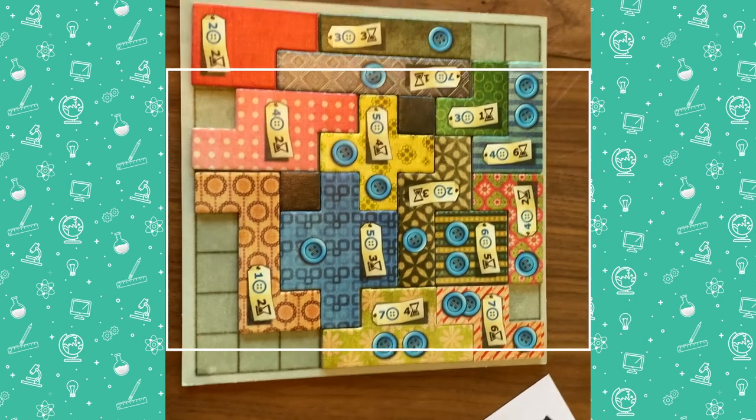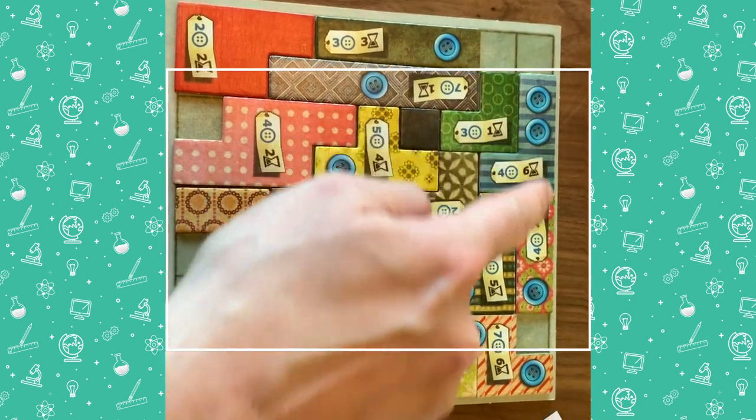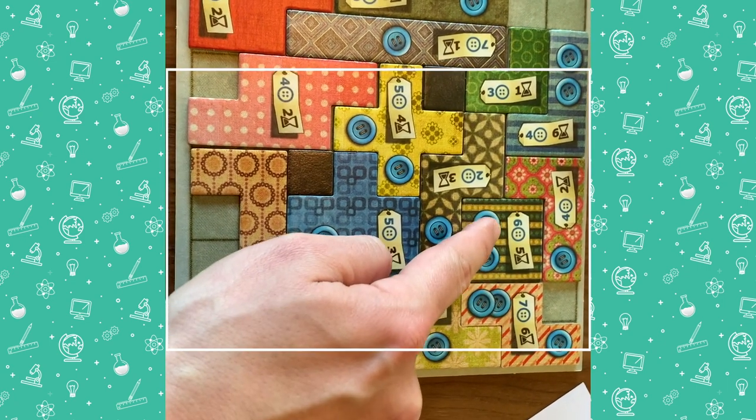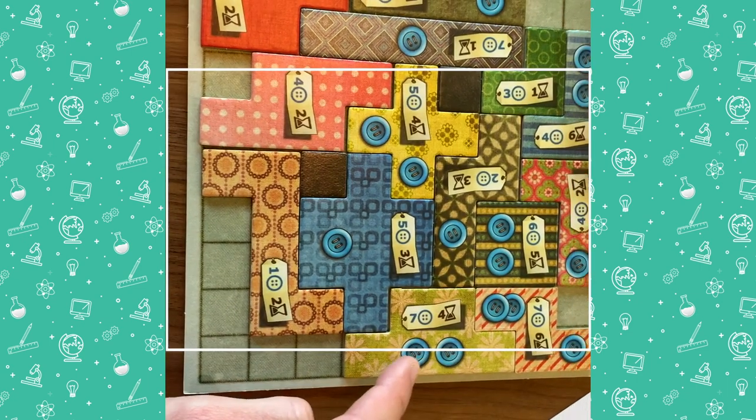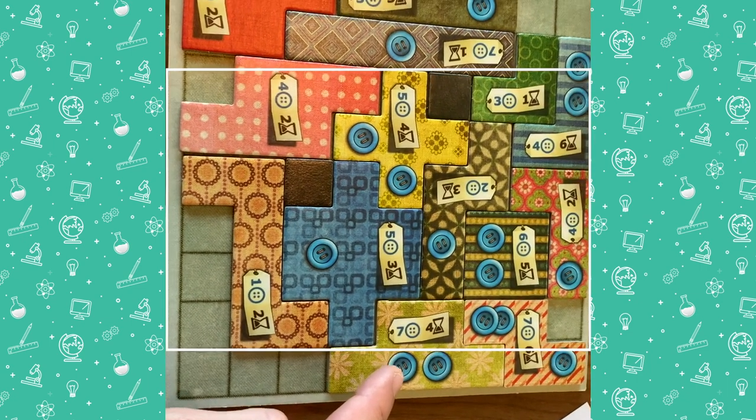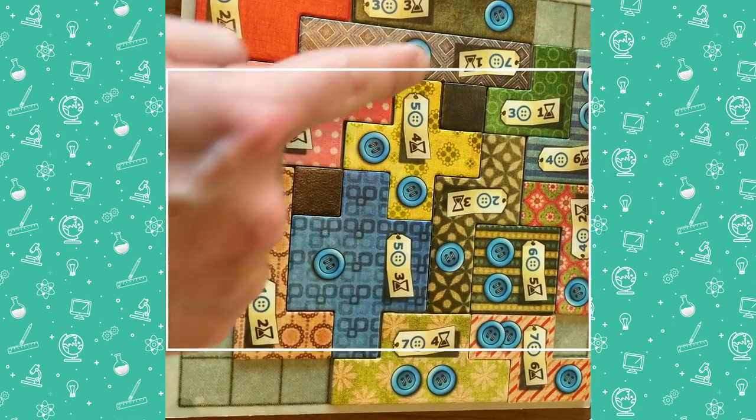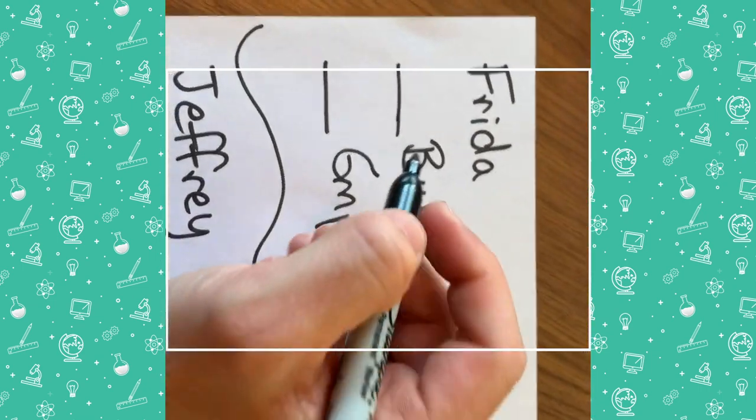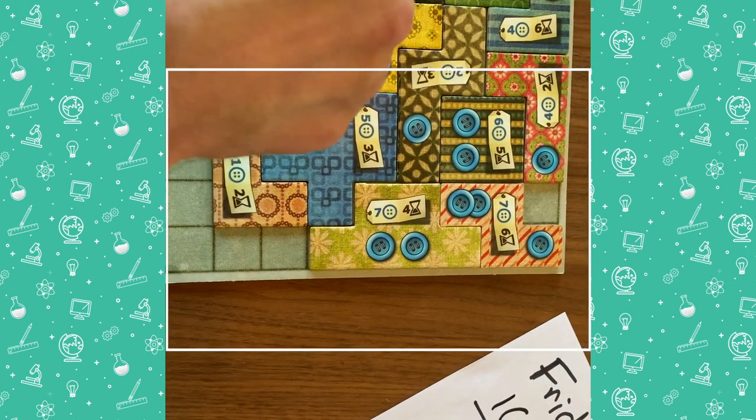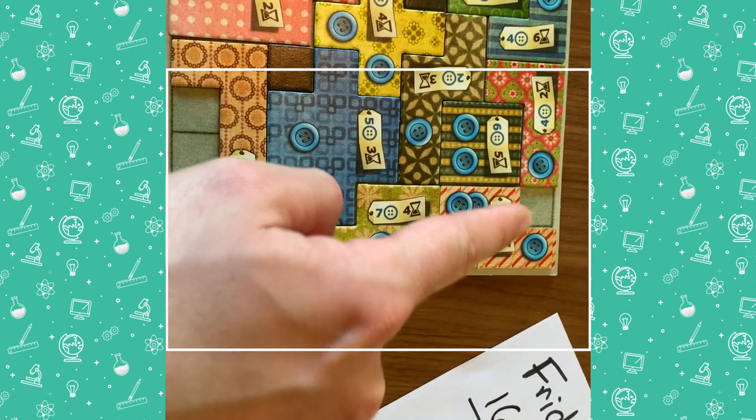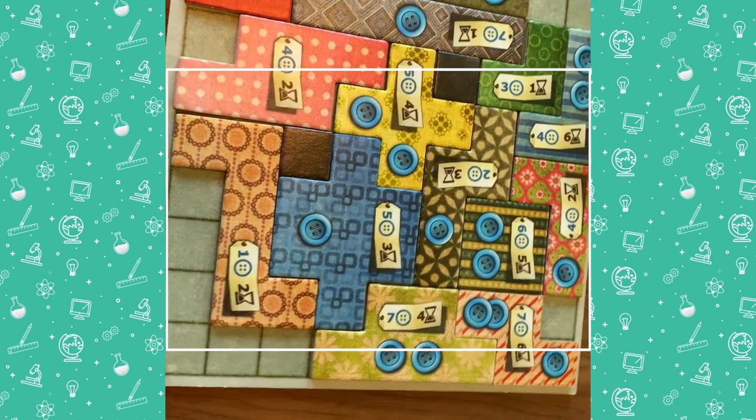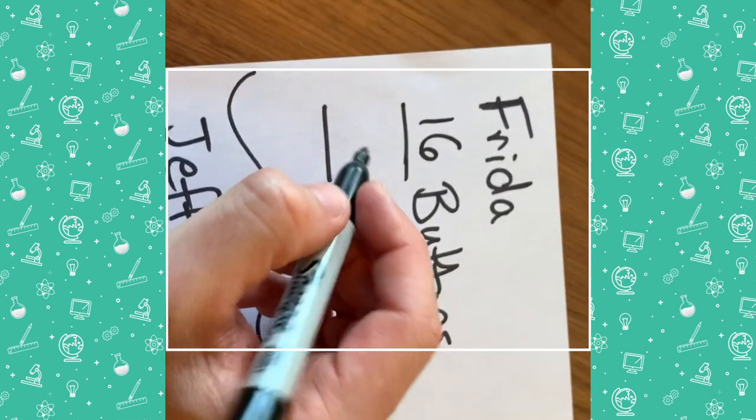Can you count how many buttons and empty spaces Frida has? Let's see. Frida has 1, 2, 3, 4, 5, 6, 7, 8, 9, 10, 11, 12, 13, 14, 15, 16 buttons. Let's write that down. And she also has 1, 2, 3, 4, 5, 6, 7, 8, 9, 10 empty spaces. Way to go Frida.